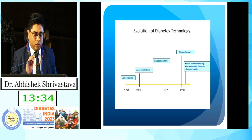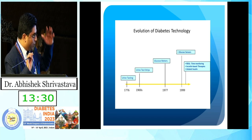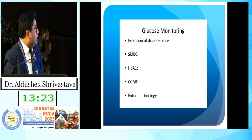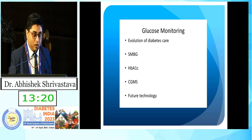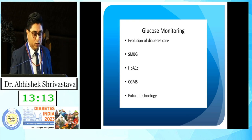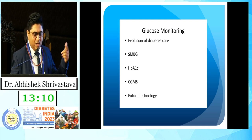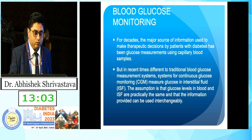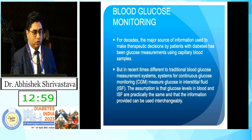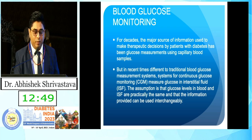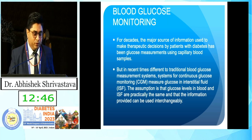The evolution of diabetes technology goes back over the last hundred years. Today we have therapeutic and diagnostic options. Most importantly, I would like to highlight the diagnostic procedures we have right now: first, self-monitoring of blood glucose; second, HbA1c, which everyone knows; third, CGMS; and future technology. For decades, the major source of information used to make therapeutic decisions for patients with diabetes has been glucose measurement, and we had been using the simple glucometer to measure capillary blood glucose.